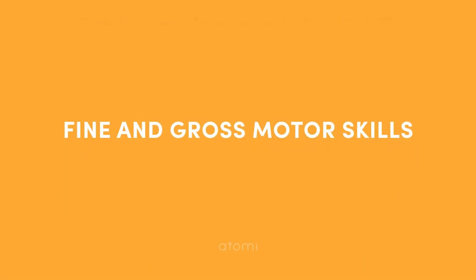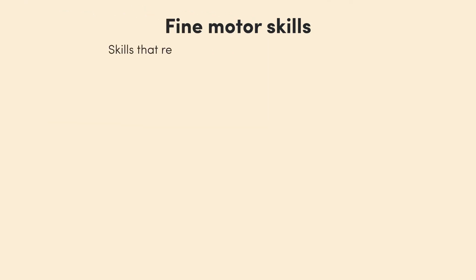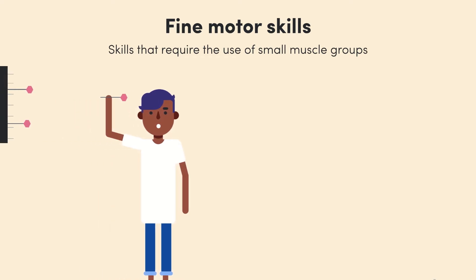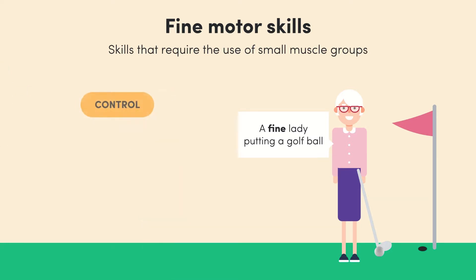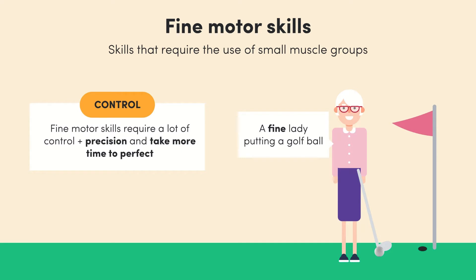Next up, let's take a look at fine and gross motor skills. Fine motor skills are those that require the use of only small muscle groups, like throwing a dart or putting in golf. These skills require a lot of precision and control, and normally take a lot longer to perfect — just because it looks easy doesn't mean it actually is.